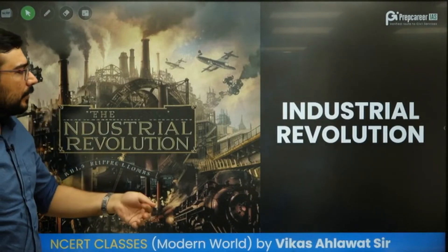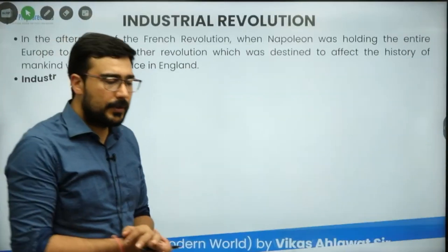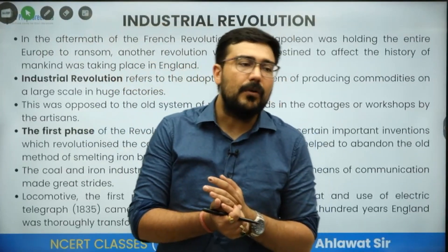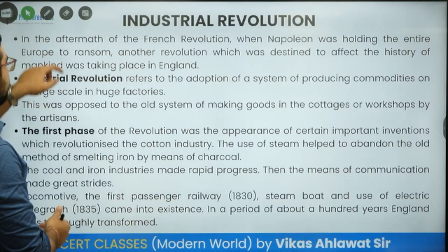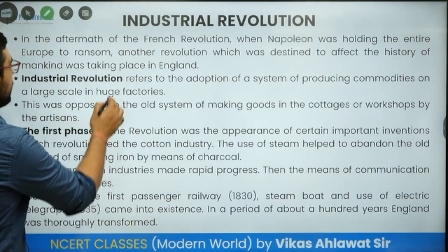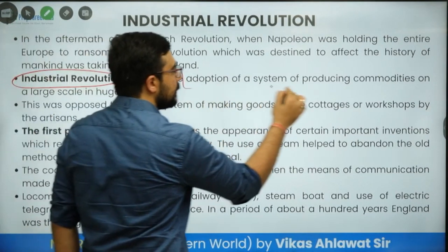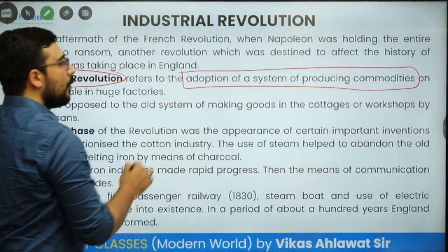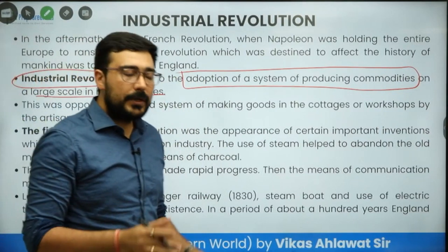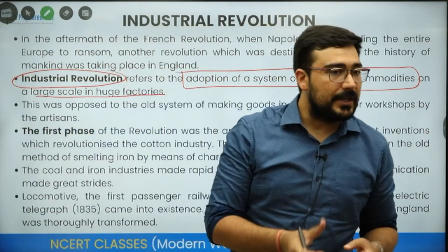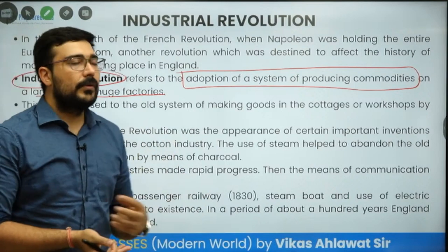Now let us switch towards industrial revolution. Why industrial revolution? Because the 18th century is also the beginning of industrial revolution. Industrial revolution refers to the adoption of a system of producing commodities on a large scale in huge factories. Machine-based production, factory-based production, and large-scale production are all linked with industrial revolution.